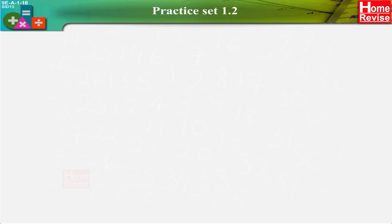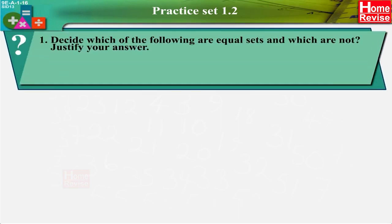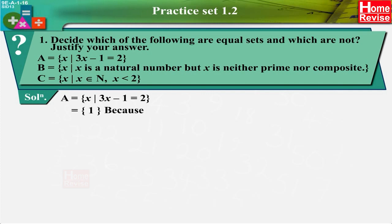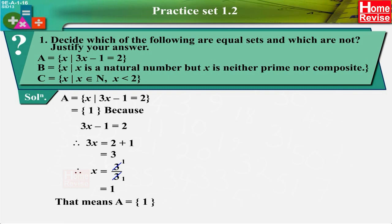Practice Set 1.2, Question 1: Decide which of the following are equal sets and justify your answer. A = {x : 3x − 1 = 2}, B = {x : x is a natural number but neither prime nor composite}, C = {x : x ∈ N and x < 2}. Solution: For set A, 3x − 1 = 2 → 3x = 3 → x = 1, so A = {1}.